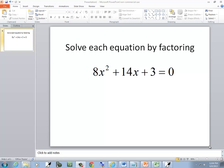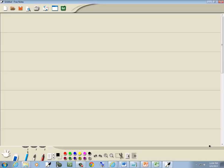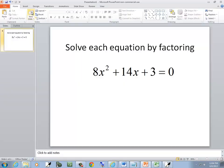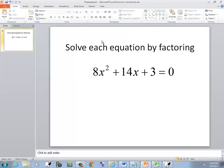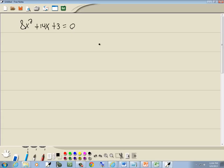Let's solve this using the zero factor property. We have 8x squared plus 14x plus 3 equals 0. Instructions here just say solve each equation by factoring, but the zero factor property is when you have 0 on one side and you can factor the other side.